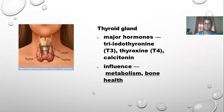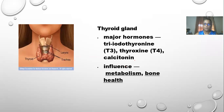Here we have our thyroid gland, which is so important in the human anatomy. Its major hormones are triiodothyronine (T3), thyroxine (T4), and calcitonin. It influences metabolism and bone health. In today's world, metabolic issues are one of the major diseases and concerns in our population. The thyroid is located at the front of your neck and is very important for metabolism and bone health.